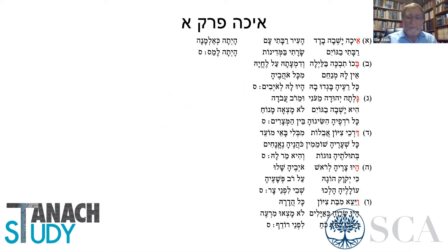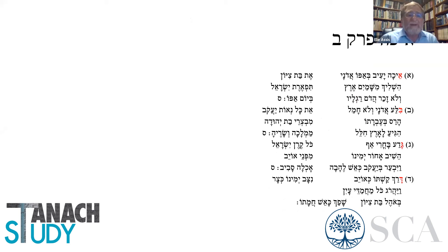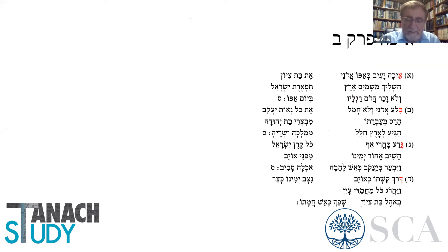In Perek Bet it's the same thing — again acrostic form. Echa Yaiv Be'apo — Aleph, Bila — Adonai, you see Aleph, Bet, Gimel, Dalet, all the way to the end, to the letter Taf. There's only one difference between chapter 1 and chapters 2, 3, and 4: in chapters 2, 3, and 4, the order of the letters is Pei and then Ayin, rather than Ayin then Pei as in the alphabet today.